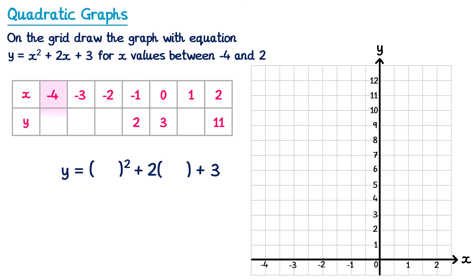We're going to start at the left hand side of the table where x is equal to negative 4. So we place negative 4 inside each of those brackets. You may be lucky and this could come up in a calculator paper, but this topic has come up on paper 1, so you may have to work it out yourself. Let's assume we don't have a calculator. So we have y equals negative 4 squared — this means negative 4 multiplied by itself. When you multiply two negatives the result is positive, so negative 4 multiplied by negative 4 is positive 16.